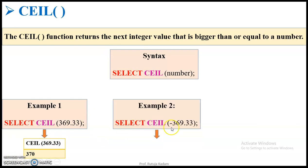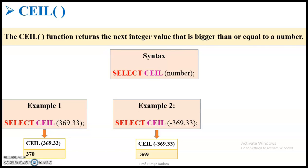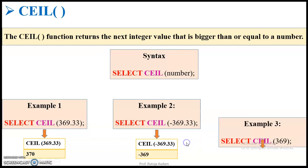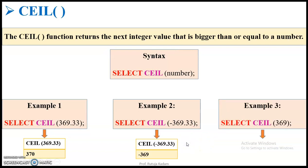For the negative value minus 369.33, the next bigger integer is minus 369, because minus 369 is bigger than minus 369.33. In the third example, if the input is already a whole number or integer, the output will be that number itself.